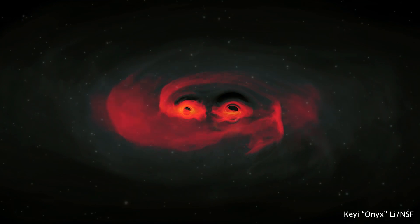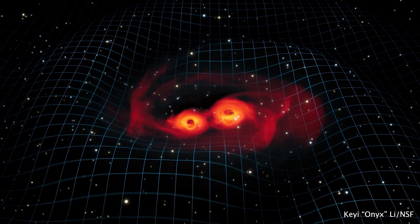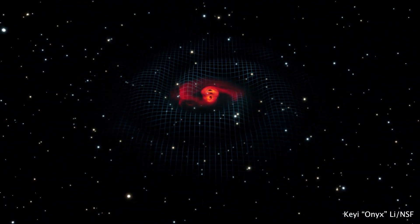What does gravity look like for something really, really big, like black holes on the other side of the universe? We can't see them, so how do we know they're there?